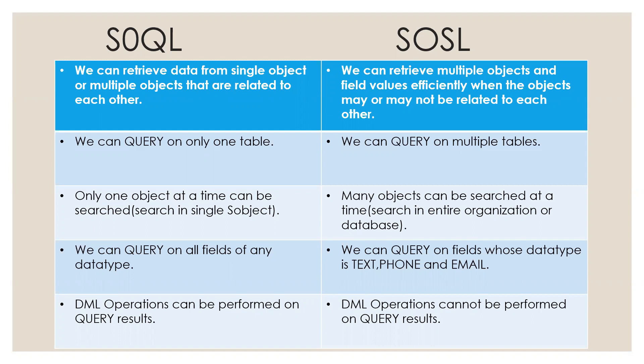Only one object at a time can be searched in Sokol, but many objects can be searched at a time — searched in the entire organization or database — by using Soso. With Sokol, we can query on all fields of any data type, but in Soso, we can query on fields whose data type is text, phone, and email, and also in sidebar fields.